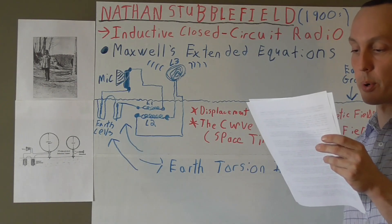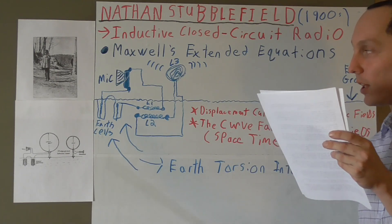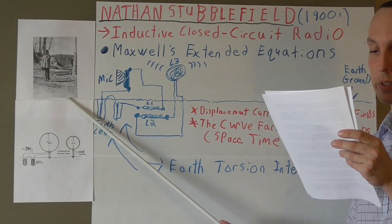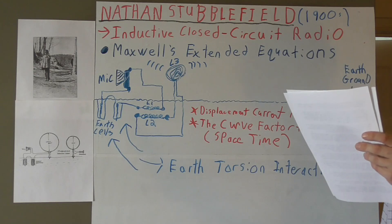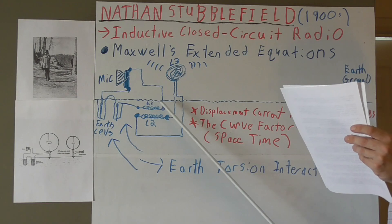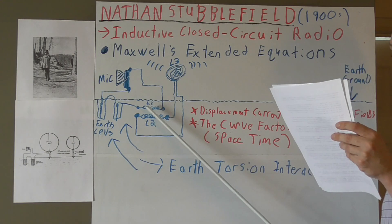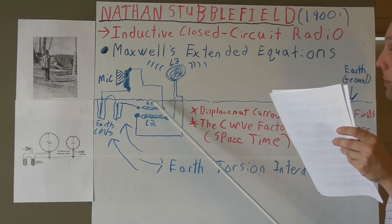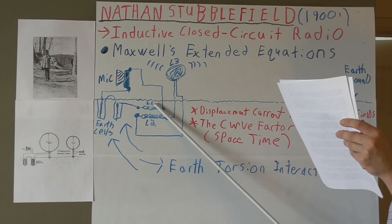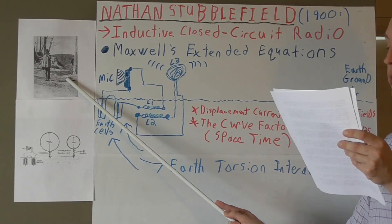If torsion fields were present and able to interact with the magnetic fields, they could have contributed to the overall efficiency of the system by enhancing signal transmission and reducing interference. If torsion fields were present in Stubblefield's system, they could potentially interact with the changing magnetic fields created by the modulated currents of the primary coil. The torsion fields could distort spacetime in a way that enhances the transmission of the magnetic fields, allowing it to travel further and be picked up by the secondary coil at a much greater distance, such as he demonstrated in his early demonstrations.